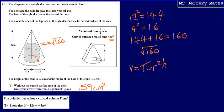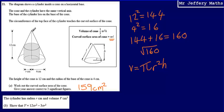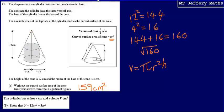The thing to spot here is that if we look at our diagram, we've actually got two cones. We've got this large cone here, and then we've also got this smaller cone that is sitting on top of the cylinder. What we can say is that these cones are similar.